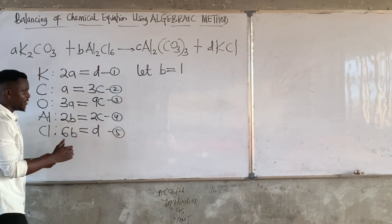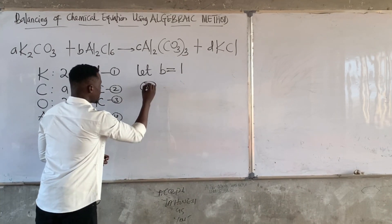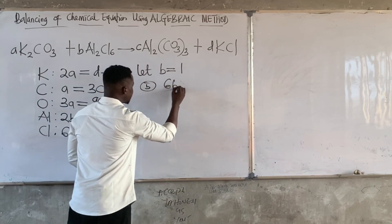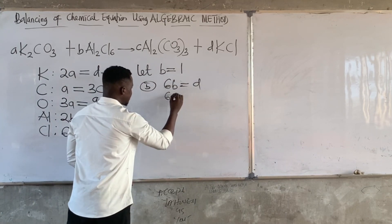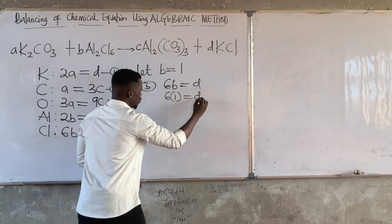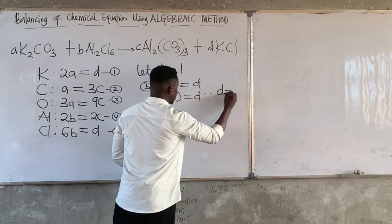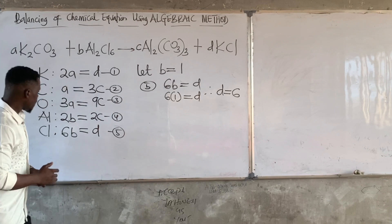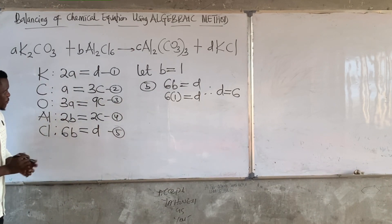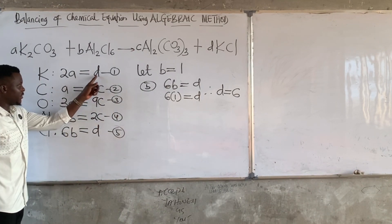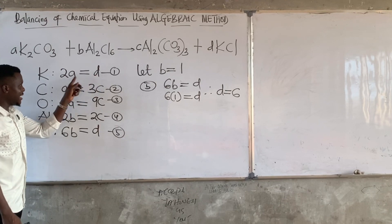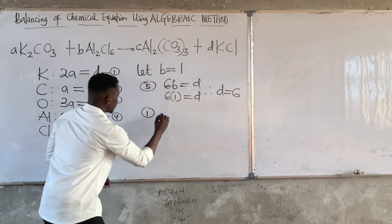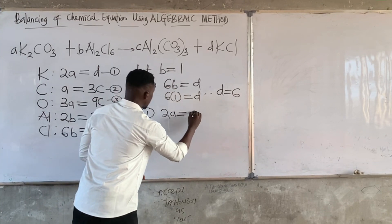From equation 5, substituting B = 1: 6B = D becomes 6 = D, so D = 6. Now from equation 1, there is D, so substituting: 2A = D becomes 2A = 6, therefore A = 6/2 = 3.